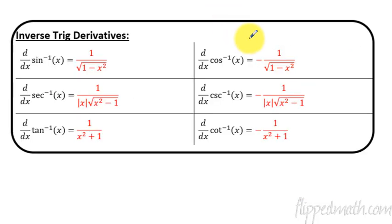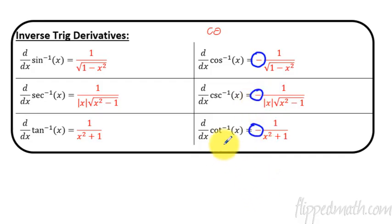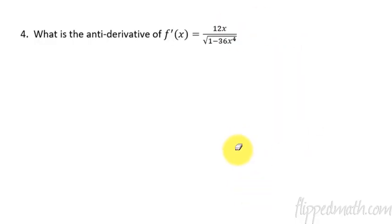Here are the other half of the inverse trig derivatives. Notice that the 'co' versions — cosine, cosecant, cotangent — stand for 'complementary.' The complementary inverse trig derivatives are exactly the same as the originals, except they are negative. So each one just has a negative sign in front, and everything else is identical. If a derivative starts with 'c', it's the negative version of the corresponding original inverse trig derivative.